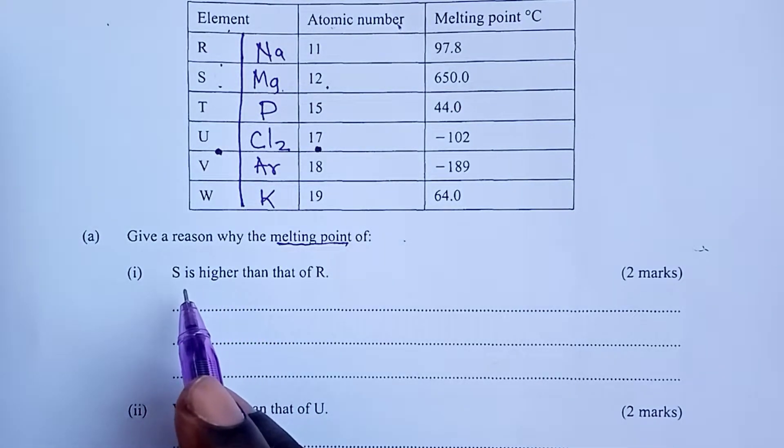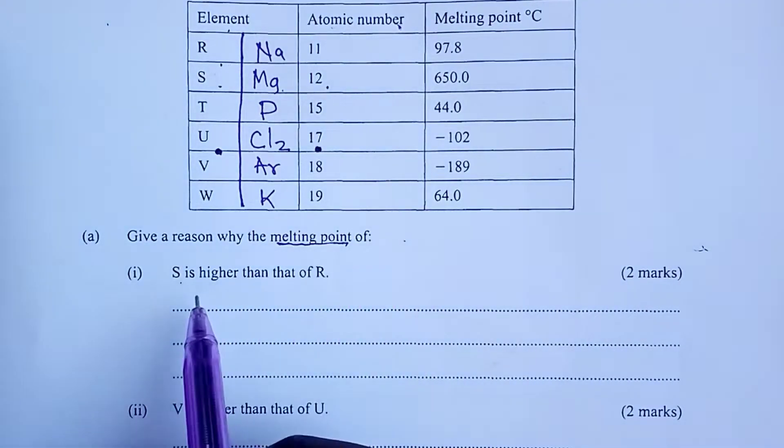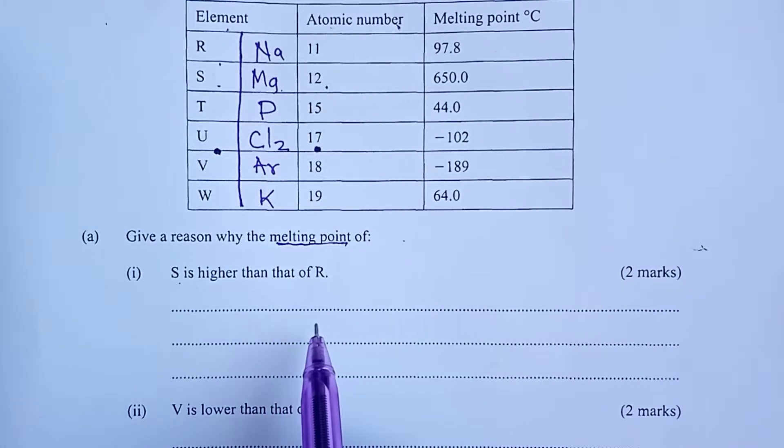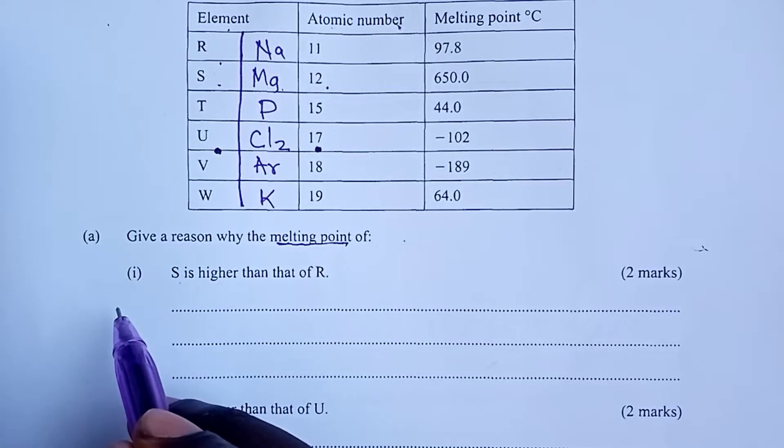For this case, the melting point of S is higher than that of R, simply because it has higher number of delocalized electrons, and therefore, the metallic bonds in it are stronger.